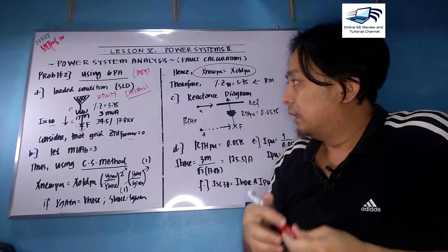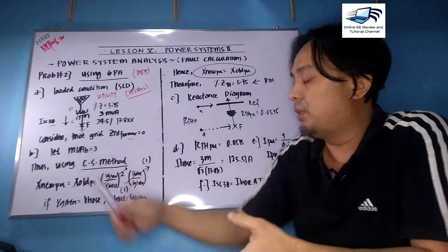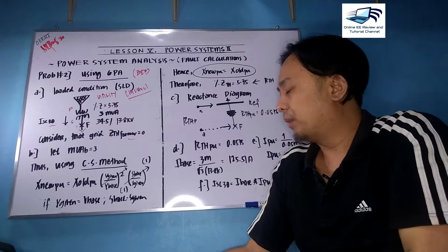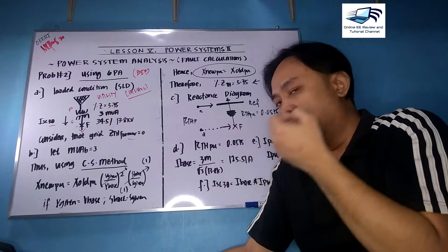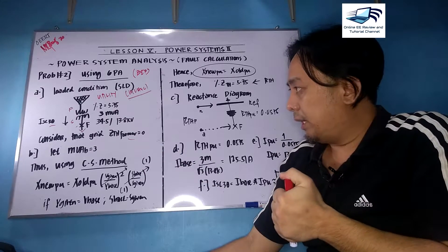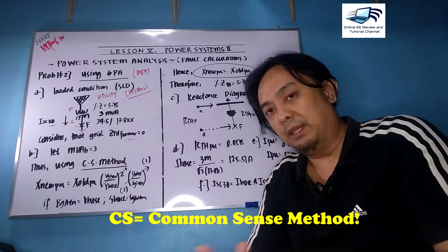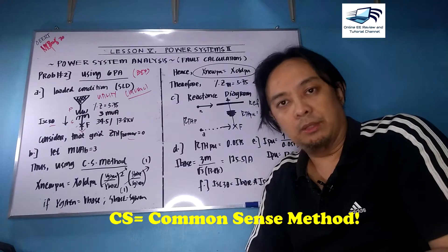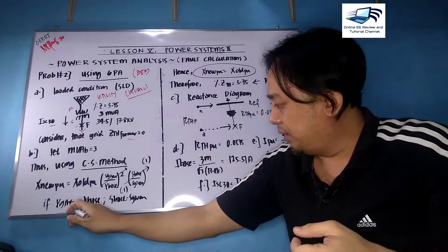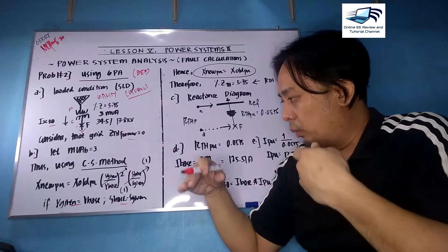Letter B: the second procedure on the six-point algorithm is we need to have a common S base, your favorite number or forever number MVA base. I use three here so we can simplify things. There's a technique I can share with you called the CS method, not Counter-Strike but Common Sense Method. This method is used when your V given equals V base and S base equals S given. When you have V base equal to V given, your pre-fault voltage is simply equal to one.